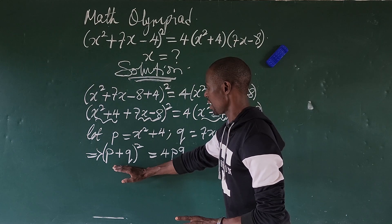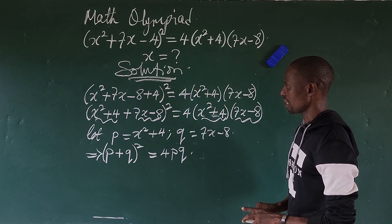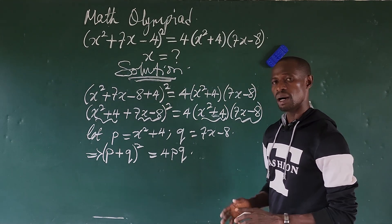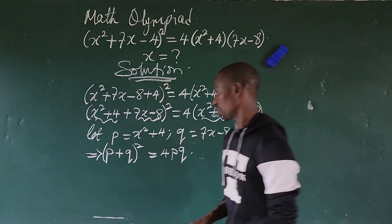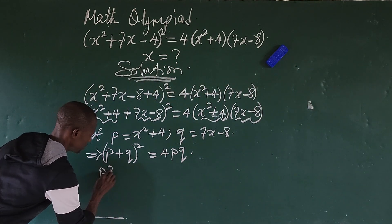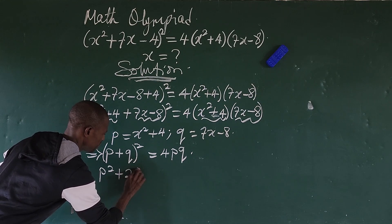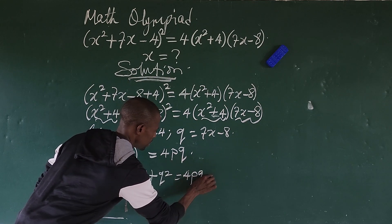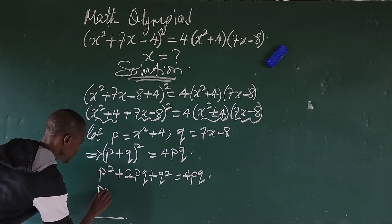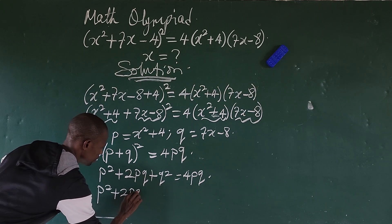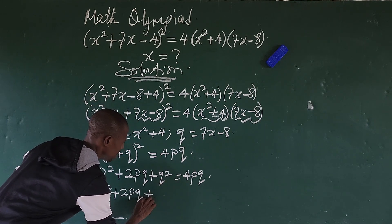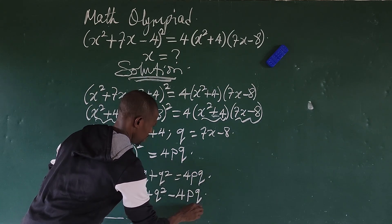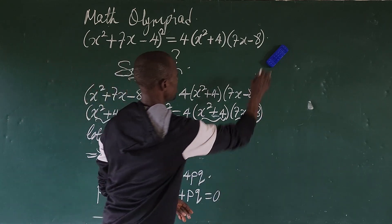Now let's expand this. Expanding (p + q)² gives us p² + 2pq + q². So the equation becomes p² + 2pq + q² = 4pq. Moving 4pq to the left-hand side gives us p² + 2pq + q² - 4pq = 0.